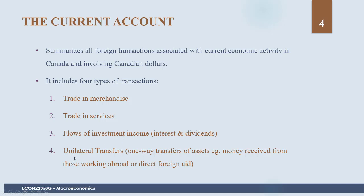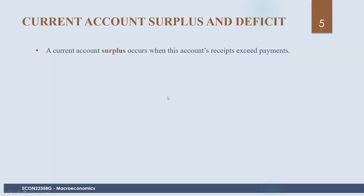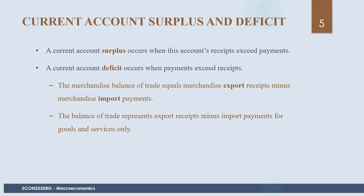The current account also includes transfers of money — one-way transfers of assets — such as money received from those working abroad or direct foreign aid. So this account covers exports and imports, investment income from financial instruments (interest or dividends), and people sending money to each other. The current account can have a surplus (receipts exceed payments) or a deficit (payments exceed receipts). The merchandise balance of trade equals merchandise exports minus merchandise imports, representing net exports for goods and services only.